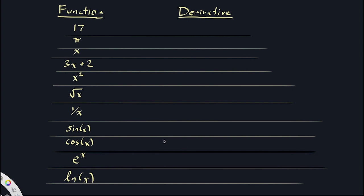To warm up, I've made a list of functions on the left column. These are functions where, with a little practice, you should be able to write down the derivatives almost immediately — within about 10 seconds or so. It takes some practice, but it's worth working on. You might want to pause the video and see how many of these derivatives you can just immediately write down. Give it a try, then I'll show you the answers.